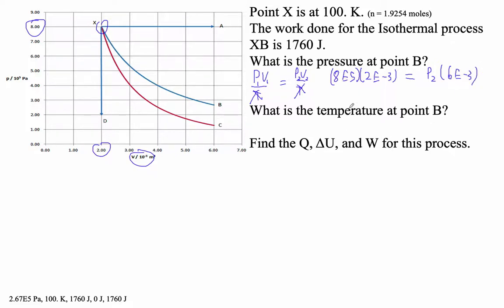We're going to go 8 E5 times 2 E minus 3 divided by 6 E minus 3. And I get 2.67 times 10 to the fifth pascals. And indeed, if you look at this guy here, it kind of looks like it's that.